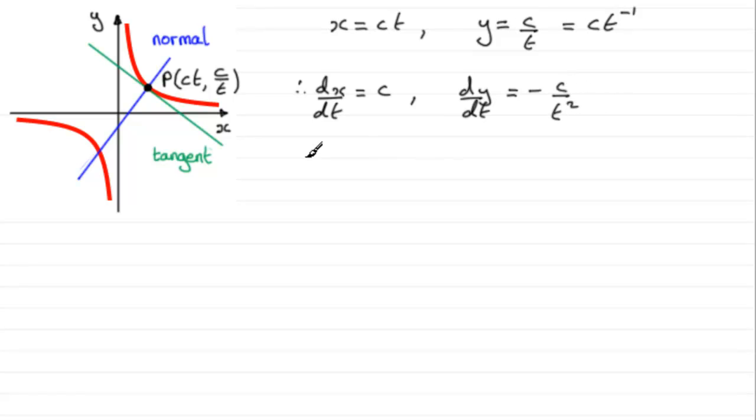So when we use the chain rule to work out what the gradient dy by dx is, dy by dx by the chain rule will be dy by dt times dt by dx. And so this is going to be equal to dy by dt is minus c over t squared.